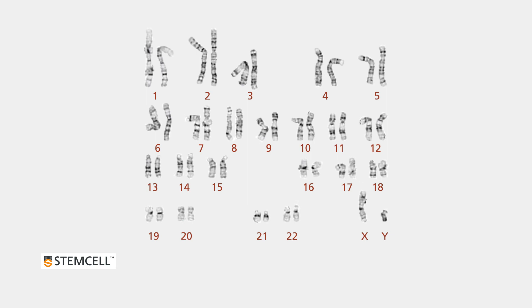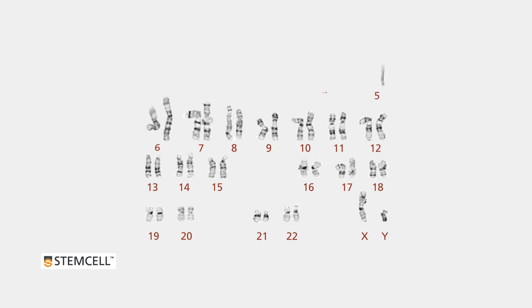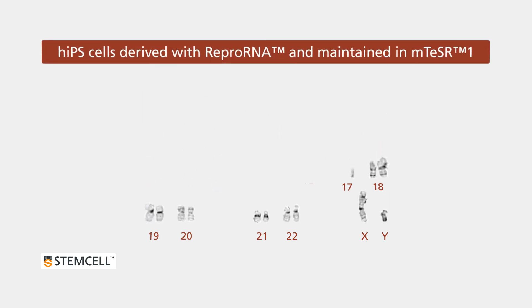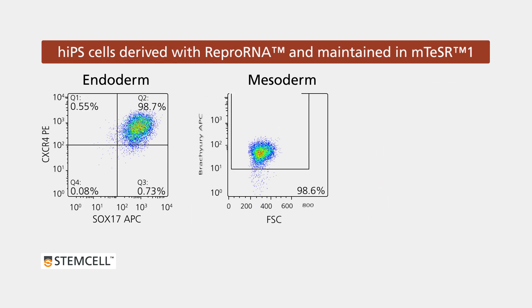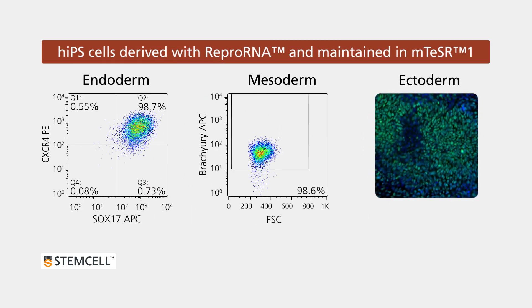Successful generation of new IPS cell lines should display normal karyotype, express undifferentiated cell markers, and differentiate to all three germ layers using either in vitro assays or a teratoma assay.